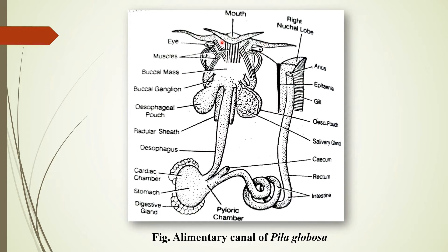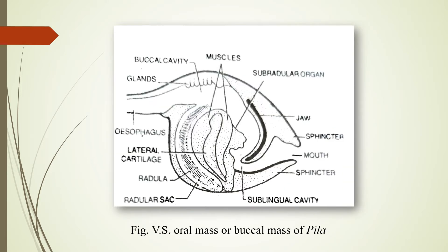The mouth is a vertical slit present at the tip of the snout, and it opens into the buccal mass. This diagram shows the structure of the oral mass or buccal mass of Pila. The buccal mass is a pear-shaped organ supported by muscles and cartilage. The cavity of the buccal mass, called the buccal cavity, opens into the esophagus, and is divided by the jaw into a smaller anterior part called the vestibule and a larger posterior part.